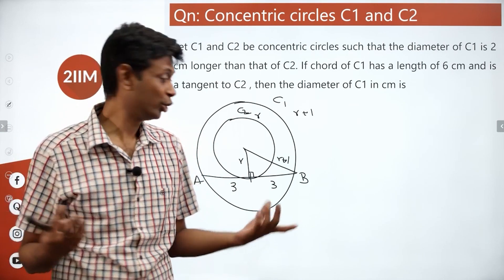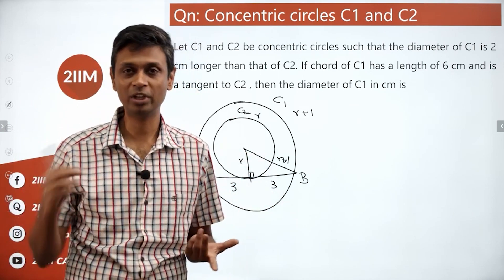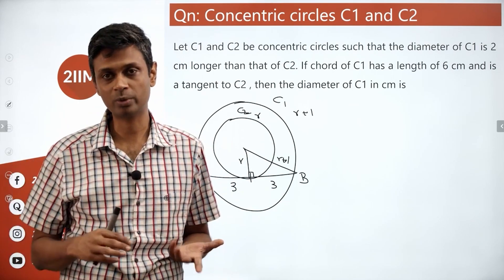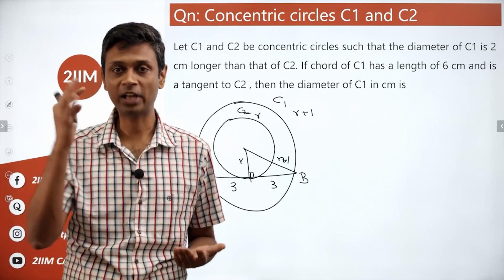3, 4, 5 Pythagorean triplet. You shouldn't be solving using Pythagoras theorem: 3 squared plus R squared equals R plus 1 whole squared. You can do that, but you shouldn't have to.